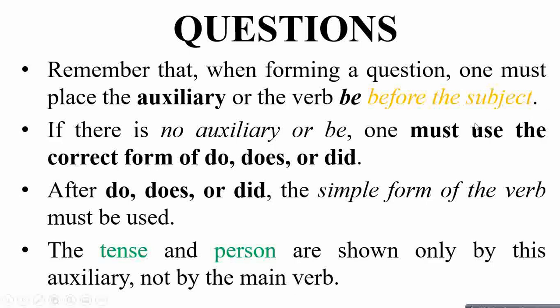If there is no auxiliary or BE, one must use the correct form of DO. DO or DID: DO is used for simple present tense with plural subjects, DOES is used for simple present tense with singular subjects, and DID is used regardless of any subject but in the case of past tense.